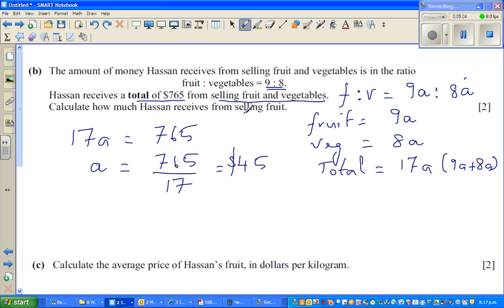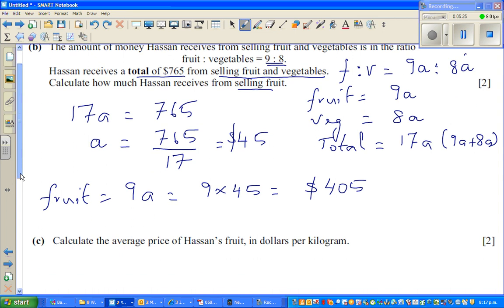The question is, how much does he get by selling fruit? Fruit is 9A, which is 9 times 45, which is 405. You can check that on a calculator. This is 360 plus 45, which is 405.